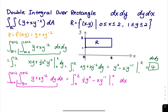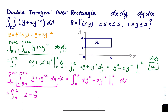Plugging y equals 2 gives one-half times 4, which is 2, and then minus x over 2. Plugging y equals 1 gives one-half minus x. Subtracting the lower bound from the upper bound: 2 minus one-half gives 3 over 2, and negative x over 2 minus negative x gives plus one-half x. So the remaining integral is from 0 to 2 of 3 over 2 plus one-half x dx.